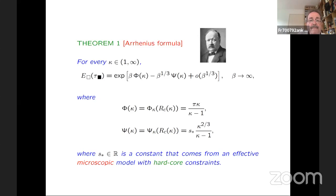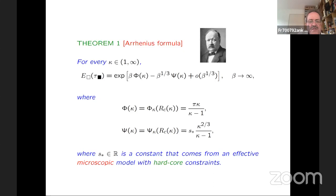There was a question about why the exponent one third appears. It has to do with a two-dimensional exponent, related to how much sticking out costs, how much is eaten away from the boundary, balanced against the total boundary being fixed. The β^{1/3} is specific to the two-dimensional setting and to the fact that we are dealing with disks. It would change if you go to other dimensions.